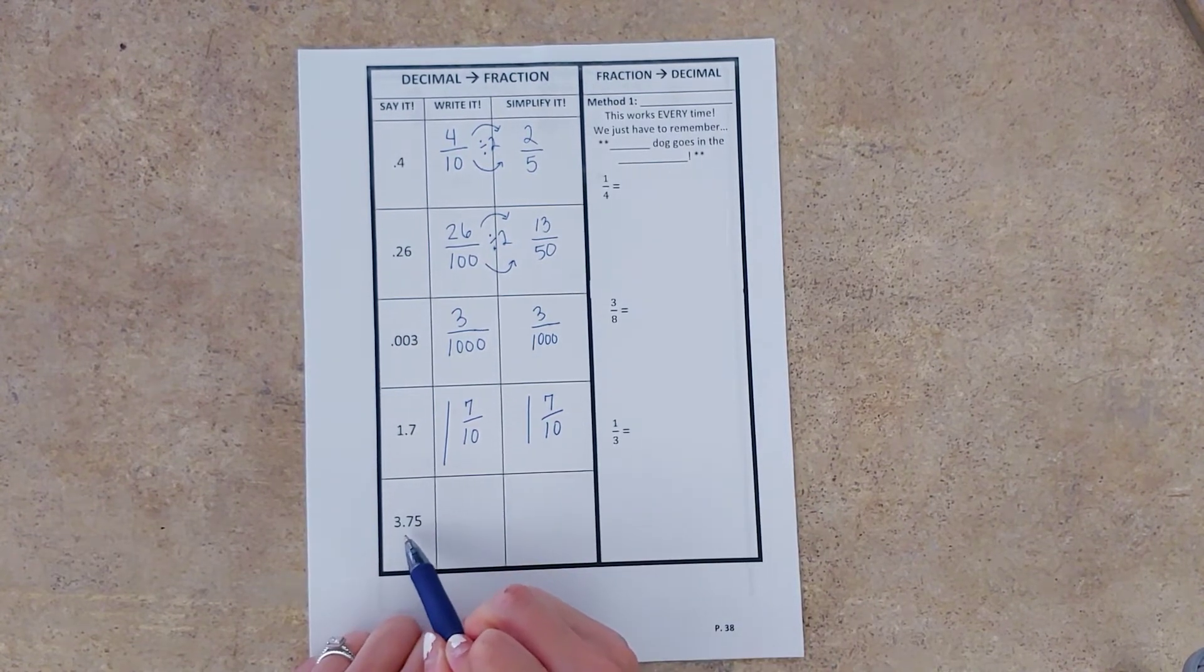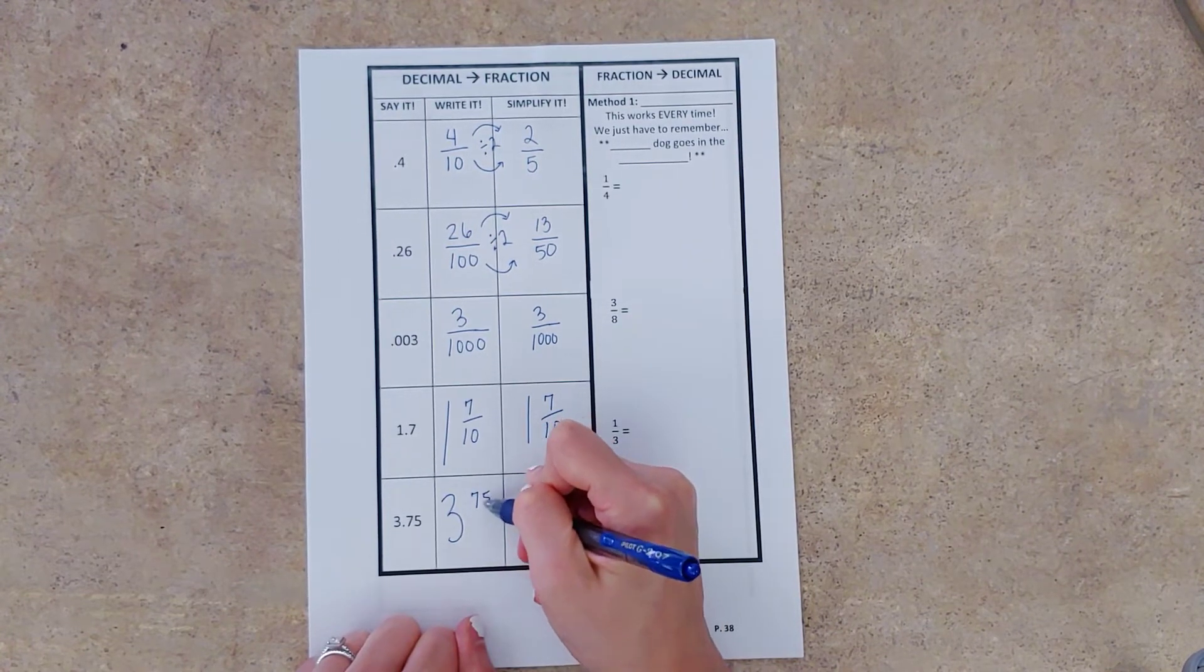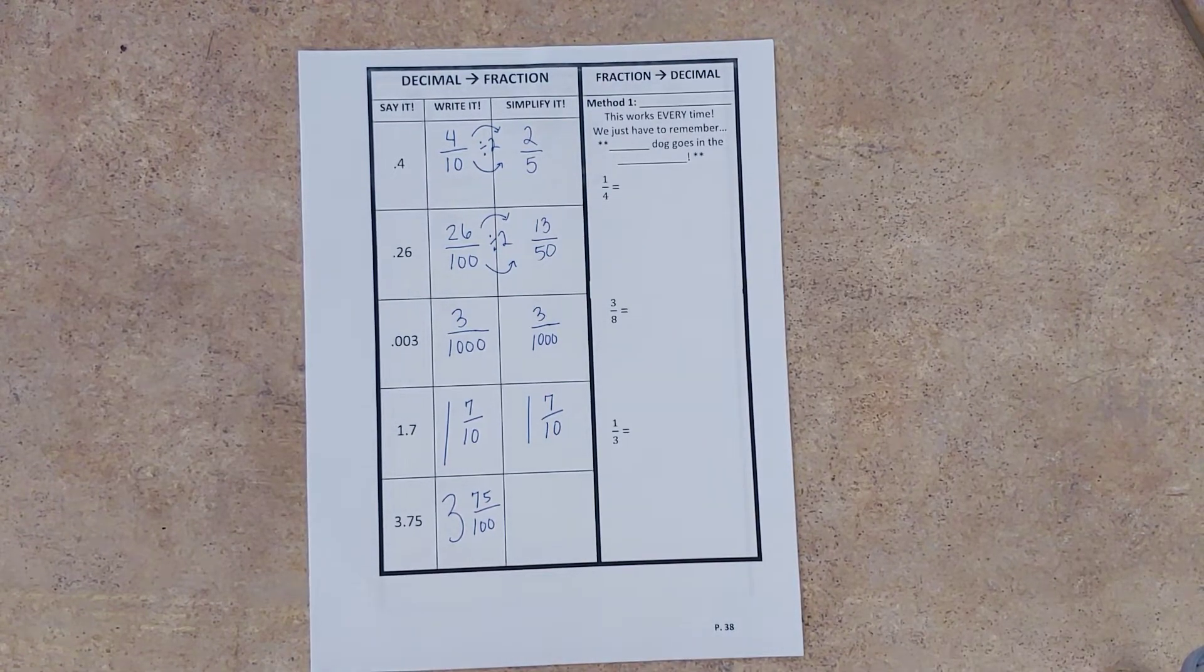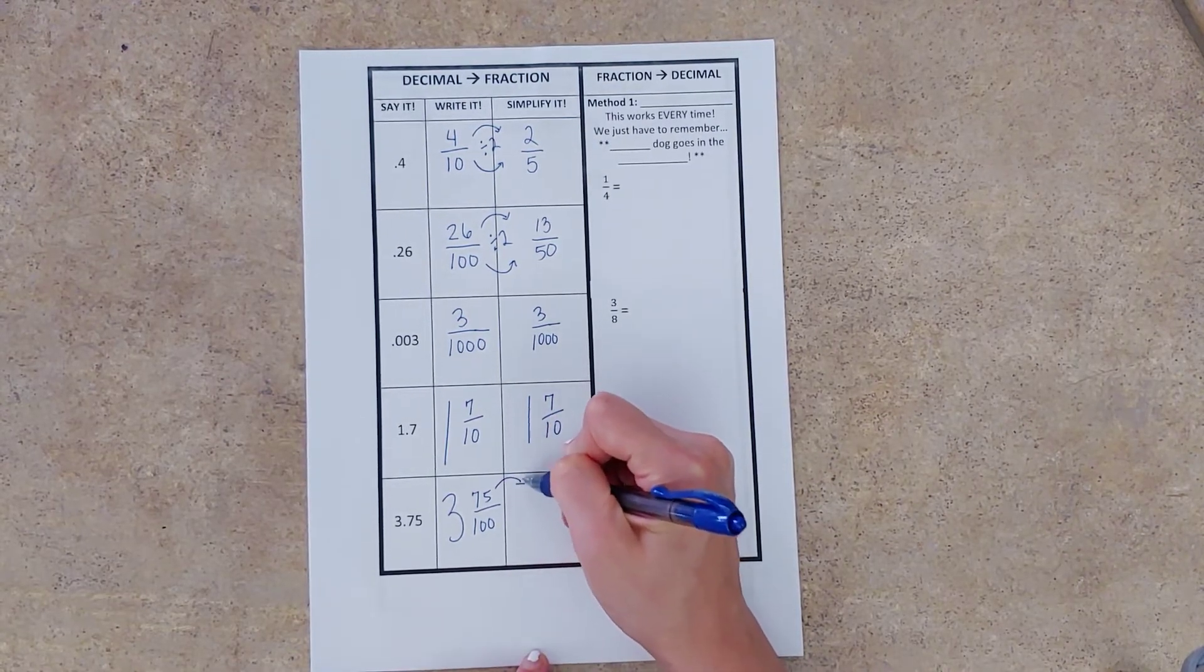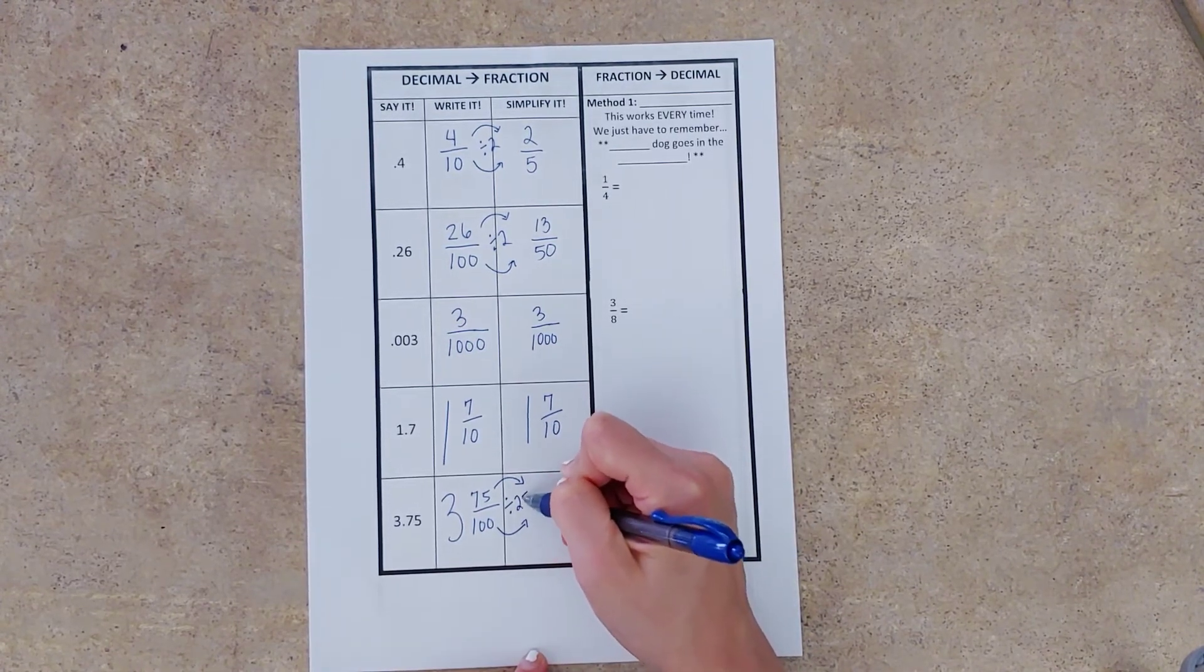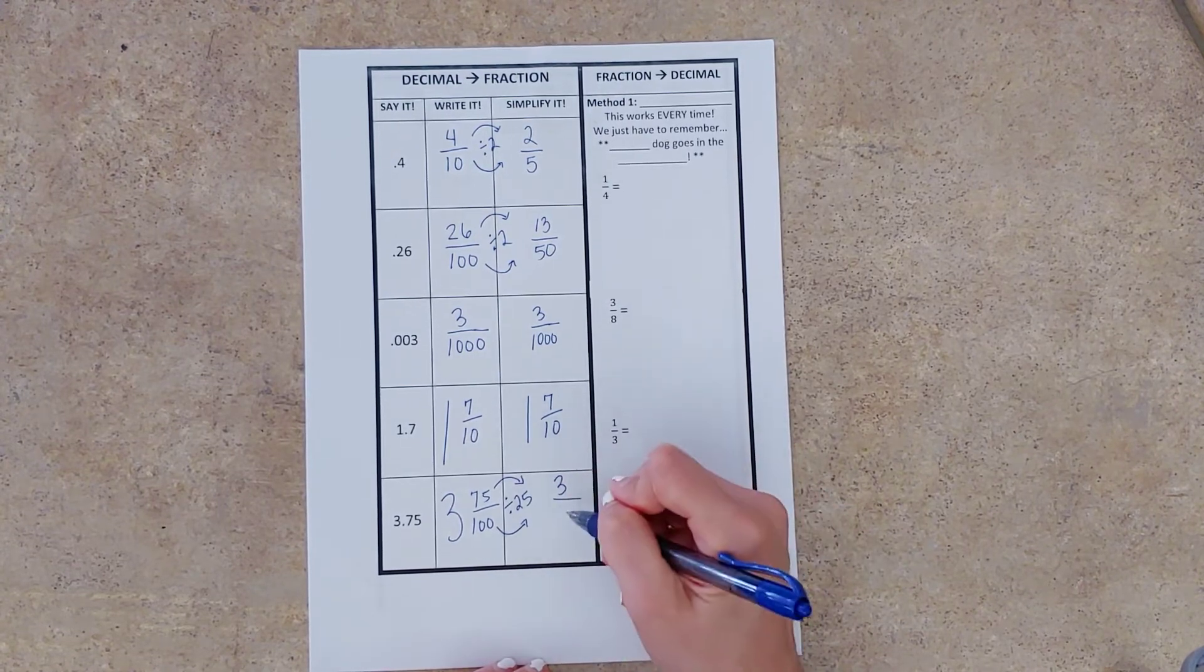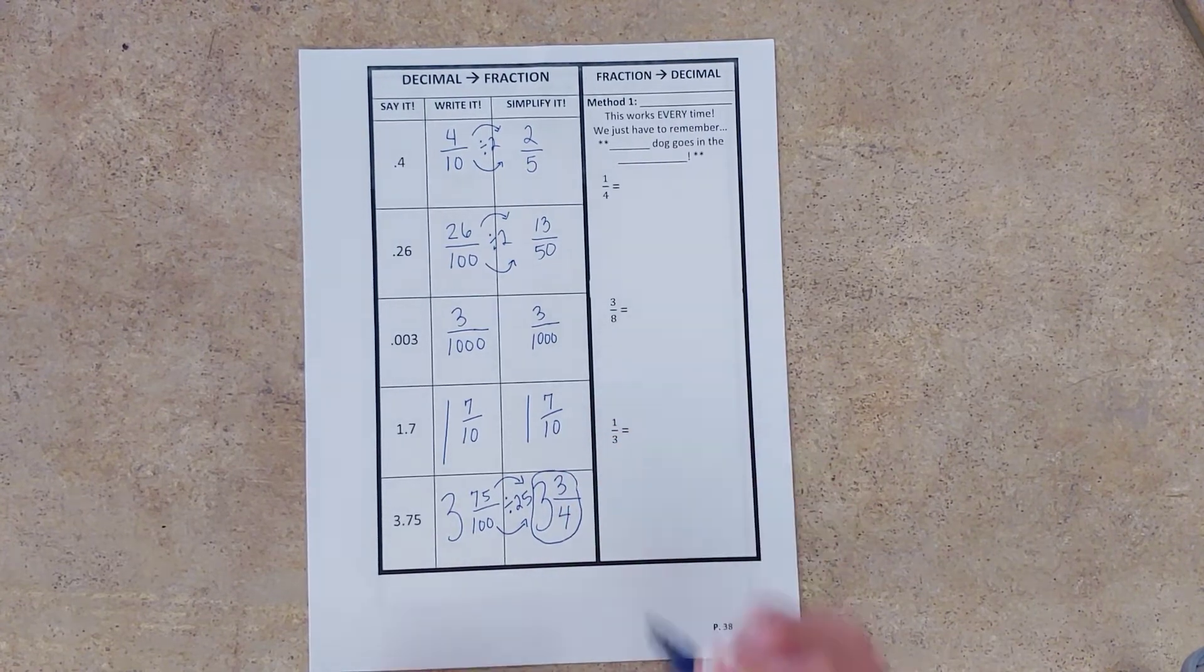And our last one. Three and seventy-five hundredths. Three and seventy-five over one hundred. All right, so seventy-five hundredths. I like to think about money when I'm working with decimals. And when I see seventy-five hundredths, I'm thinking about seventy-five cents. And I know that to get seventy-five cents, I'm talking about quarters. So I can divide both of these by twenty-five. All right, how many quarters does it take to get seventy-five cents? Three. How many quarters does it take to get a dollar? Four. So include my whole number. I've got three and three-fourths.